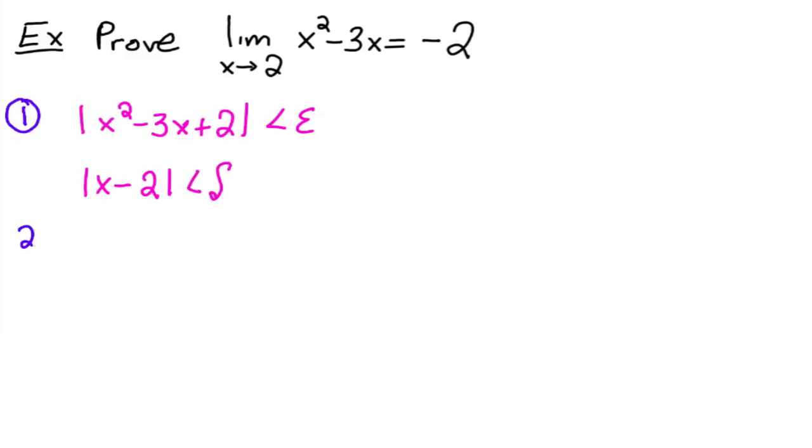Okay, step two is to use algebra to write down this guy, f of x minus l, in terms of x minus c. So notice that f of x minus l, x squared minus 3x plus 2, this guy you can factor into x minus 2 times x minus 1.